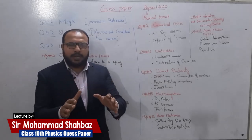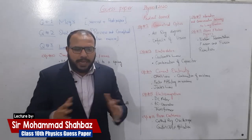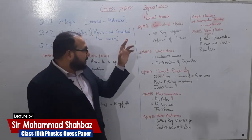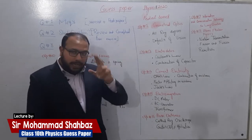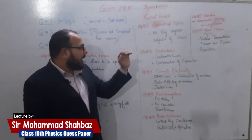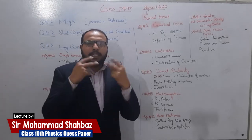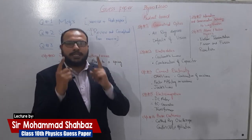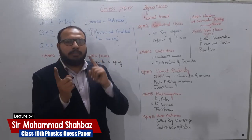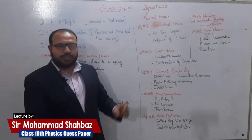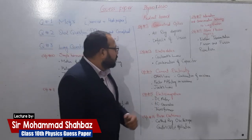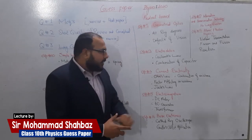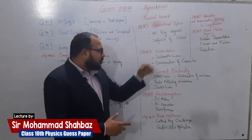Let's come to Chapter 12: Geometrical Optics. Ray diagrams are very important — you can see in past papers that the paper setter frequently gives ray diagrams. The effects of lenses and these two questions are the backbone of this chapter. If the examiner selects this chapter, these two questions are necessary.